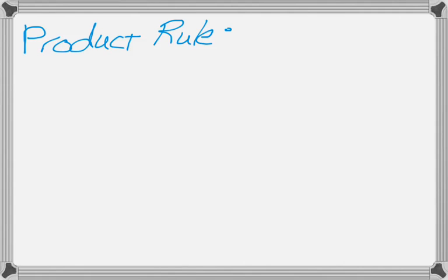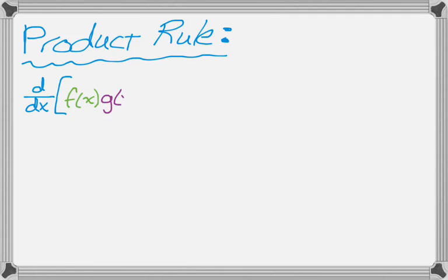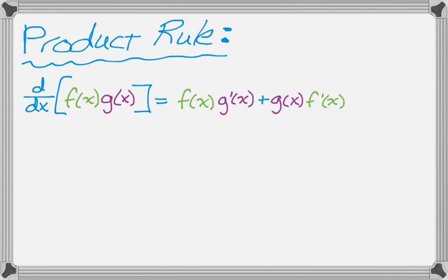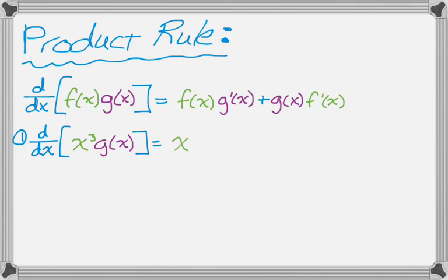Next is the product rule. The derivative of f(x) times g(x) is the first times the derivative of the second, plus the second times the derivative of the first. For example, the derivative of x cubed times g(x) — I don't even know what g(x) is, it's just function notation — is x cubed times g prime of x, plus g(x) times 3x squared. I could factor out x squared, but to save time I'm not going to.